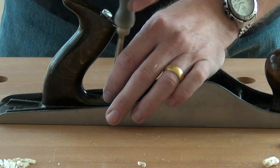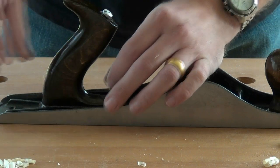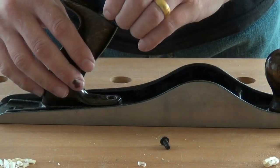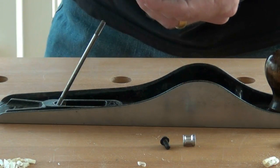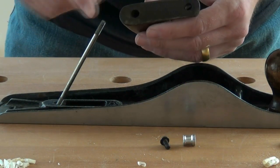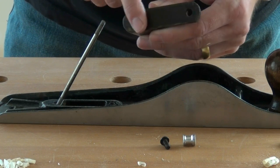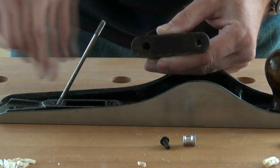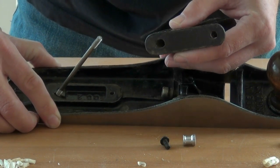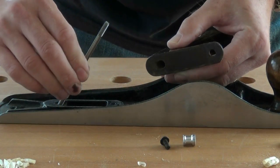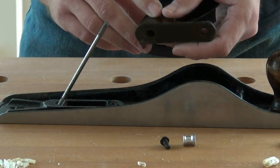If we remove the handle, we can see that this mating surface needs to mate well with that in the plane body. And if we can achieve that, we should be able to tighten down the screws such that it won't move around.